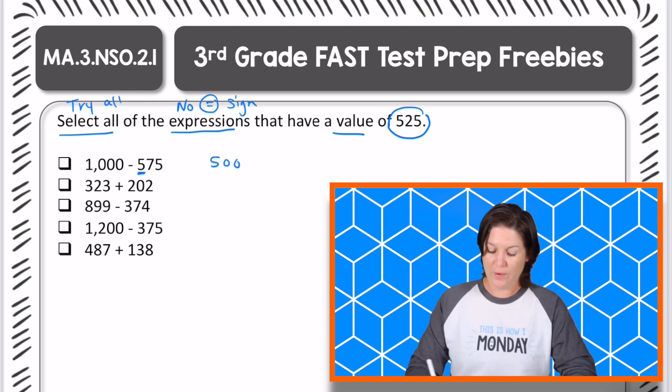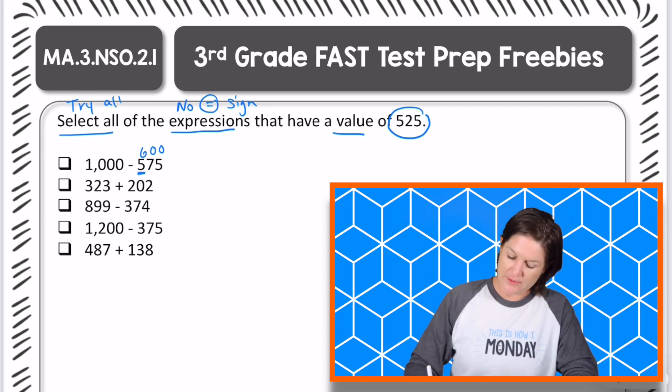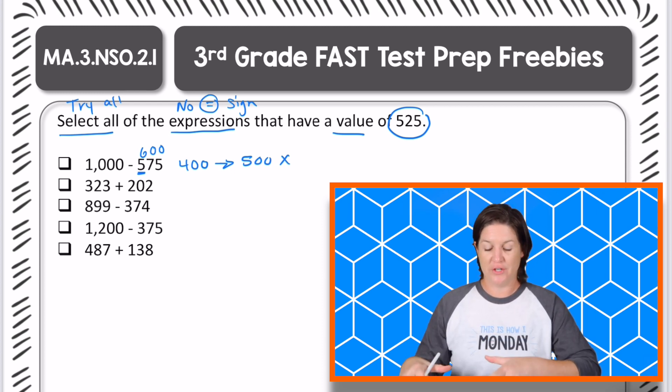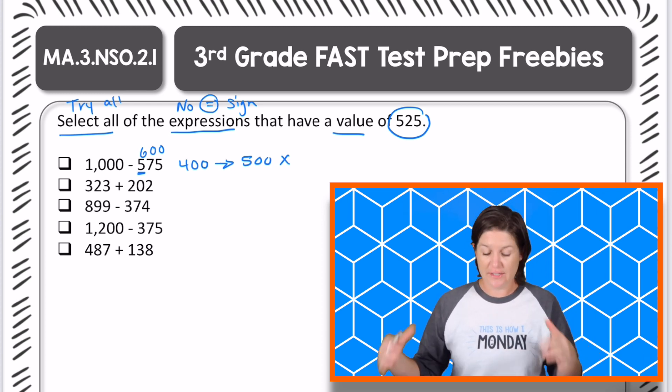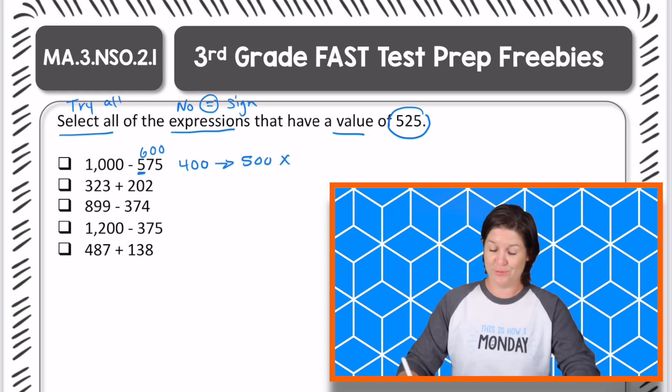And I know that 1,000 minus the next 100, if I were to round this up to 600, would equal 400, which means that our answer is going to be between 400 and 500. So 525 is actually too much. Do you see there how I use mental math to figure that out? Now, if you actually solved it and found out that 1,000 minus 575 equals 425 and then you eliminated it, that is awesome too.